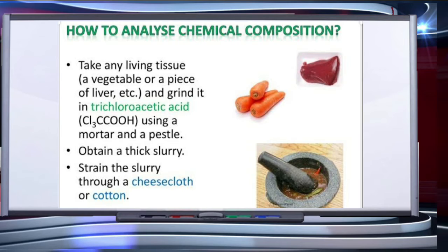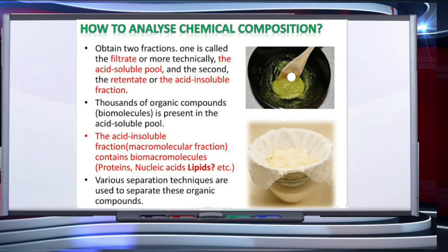Now let's talk about how to analyze the chemical composition of biomolecules. We will take any piece of living tissue — a vegetable or piece of liver — grind it in trichloroacetic acid using a pestle and mortar to obtain a thick slurry. We then strain the slurry through muslin cloth or cotton to obtain two fractions: one called the filtrate, or more technically the acid soluble pool, and the second called the acid insoluble fraction, which remains in the cotton. Thousands of organic compounds are present in the acid soluble pool.